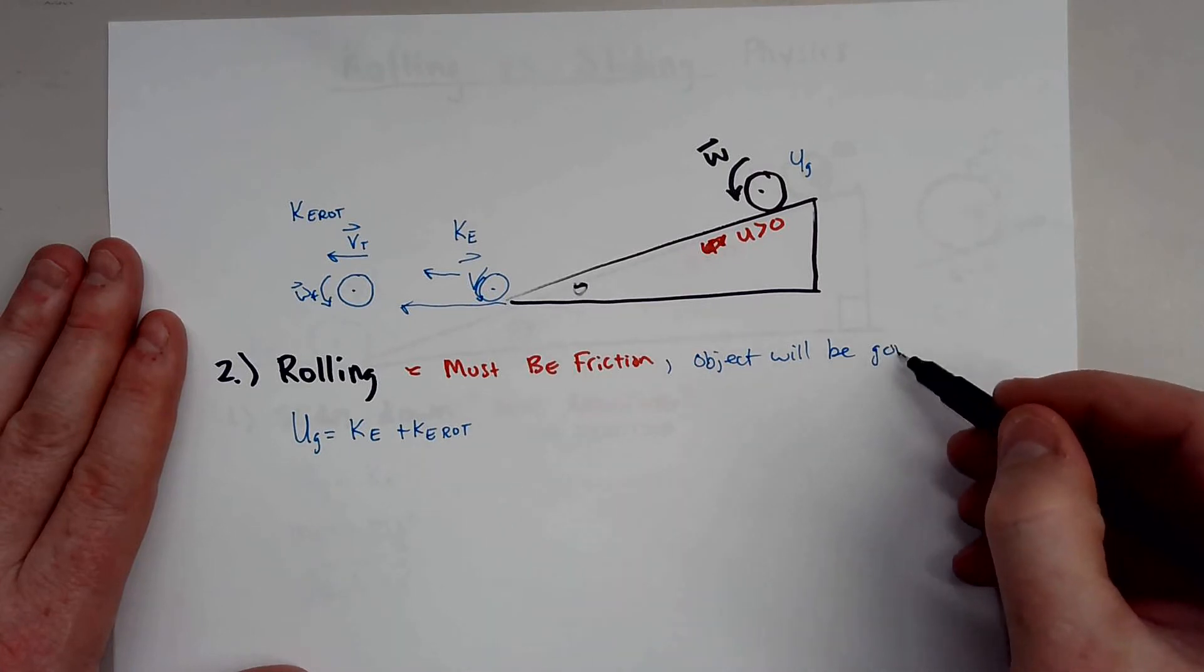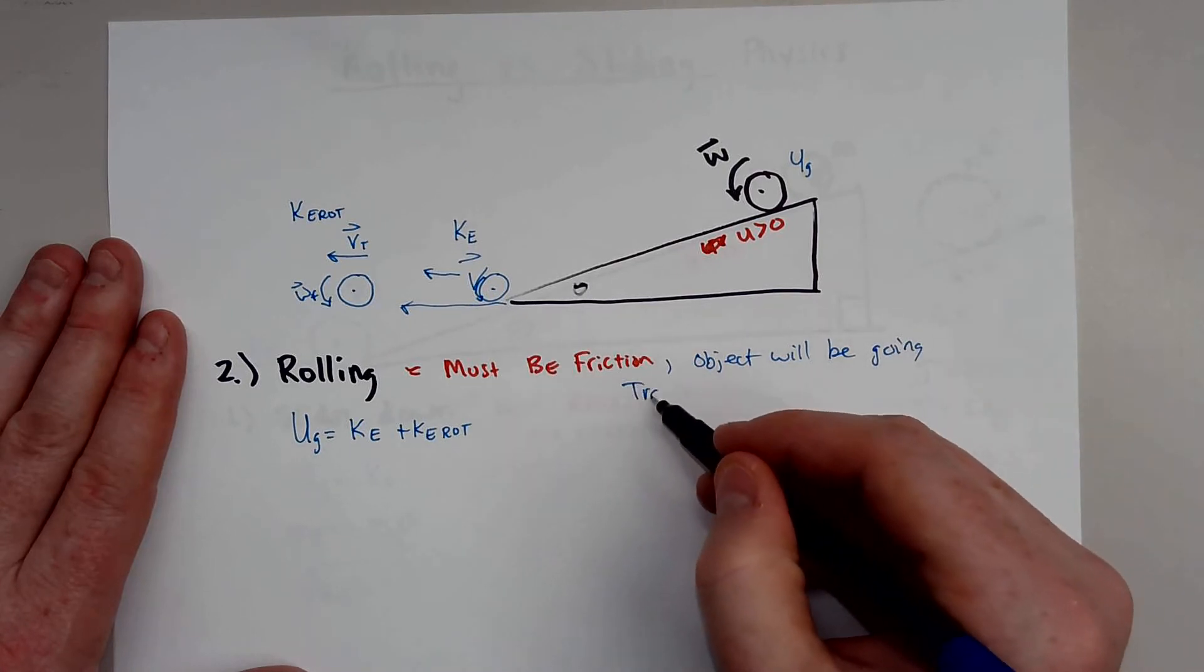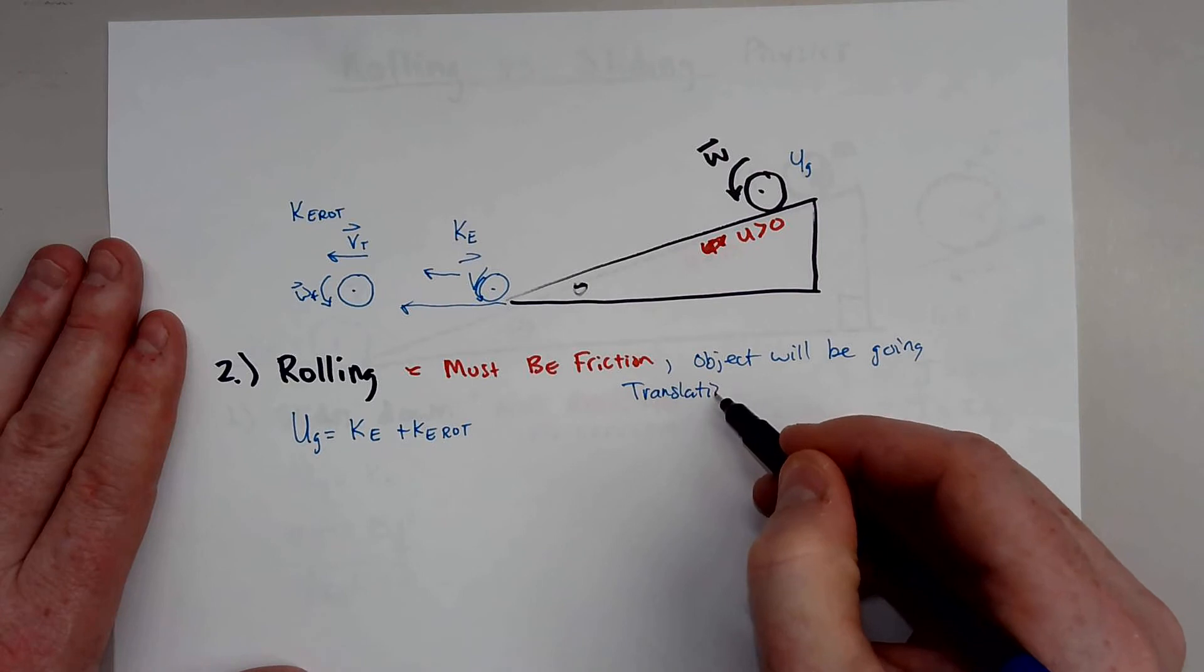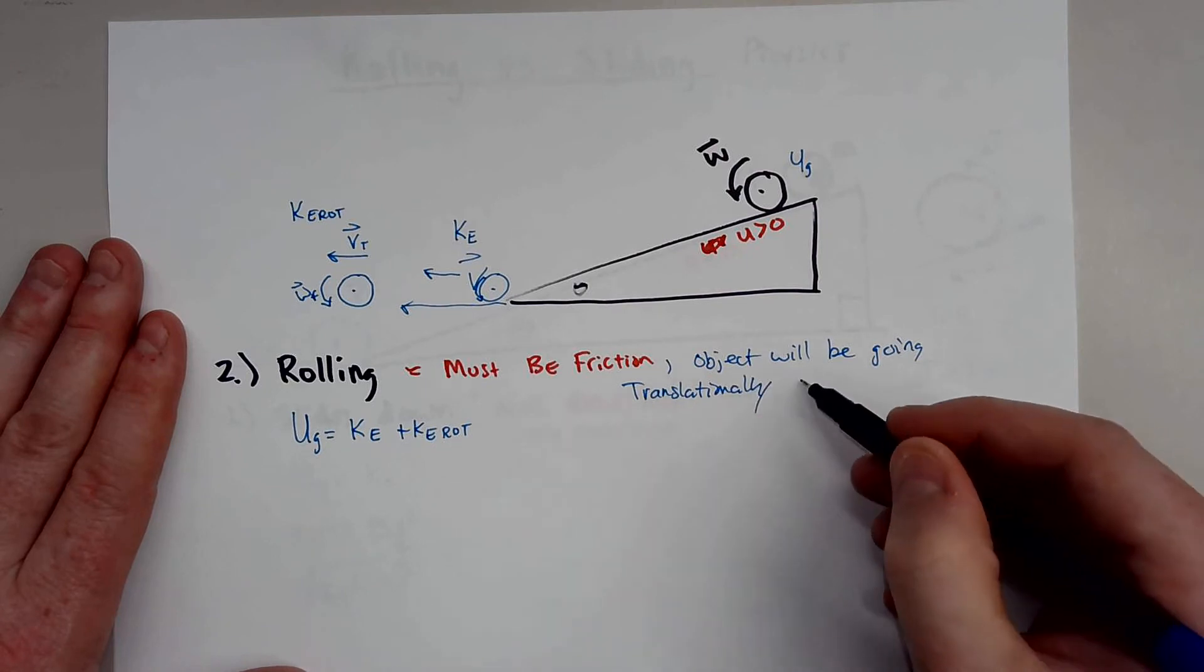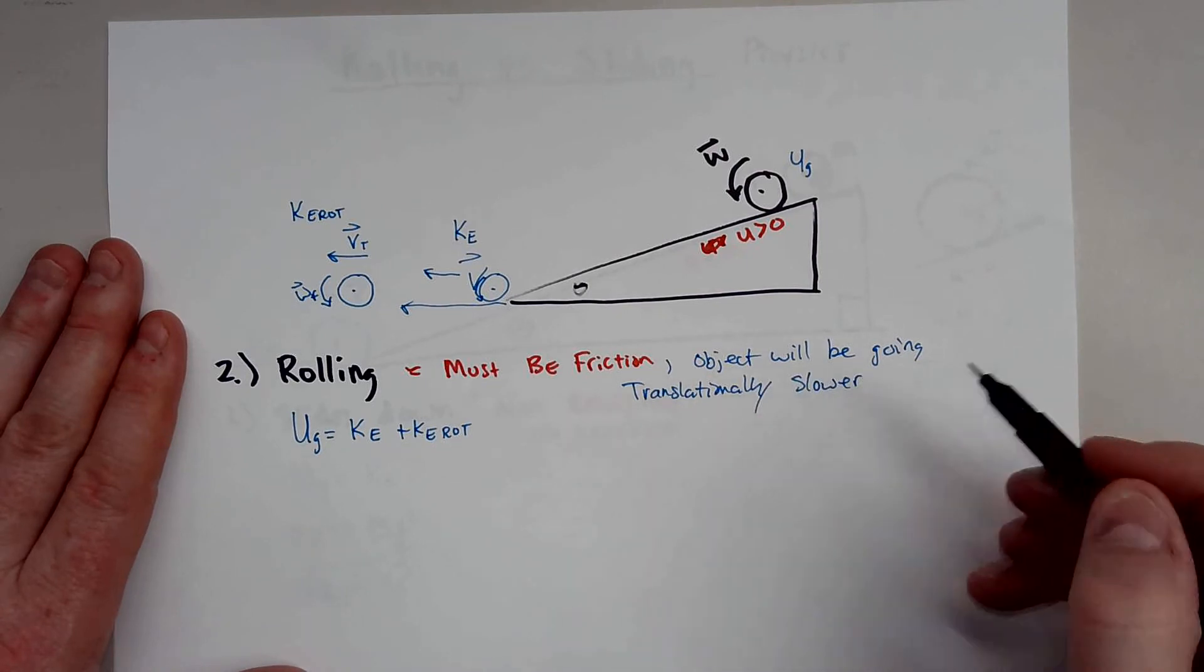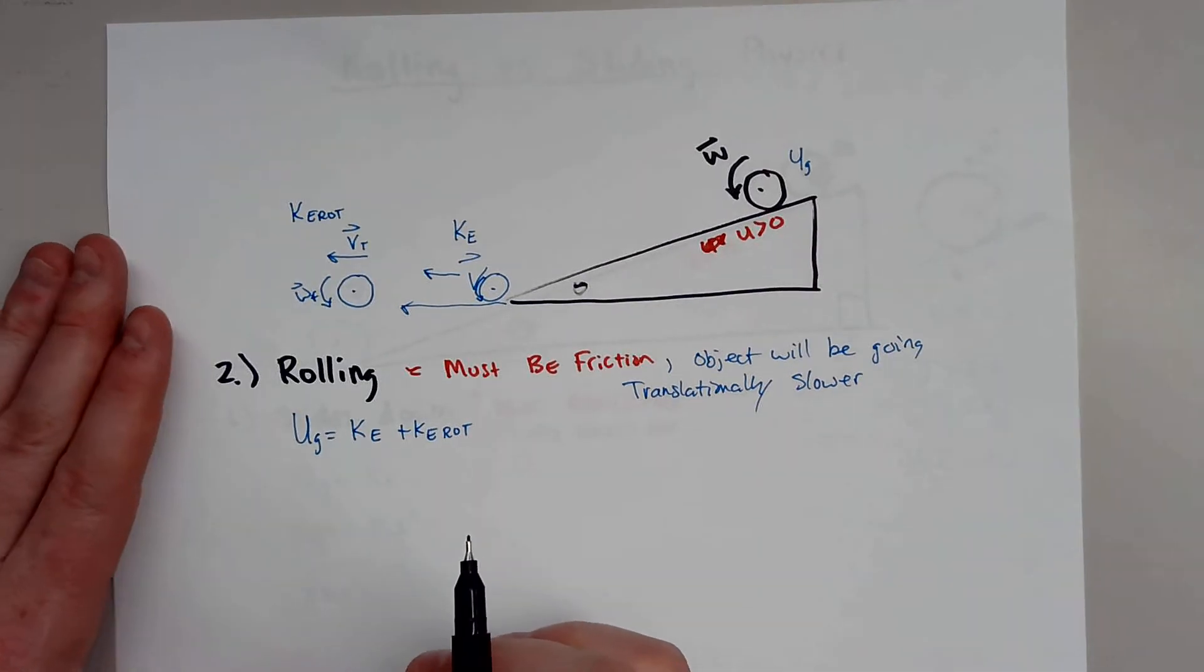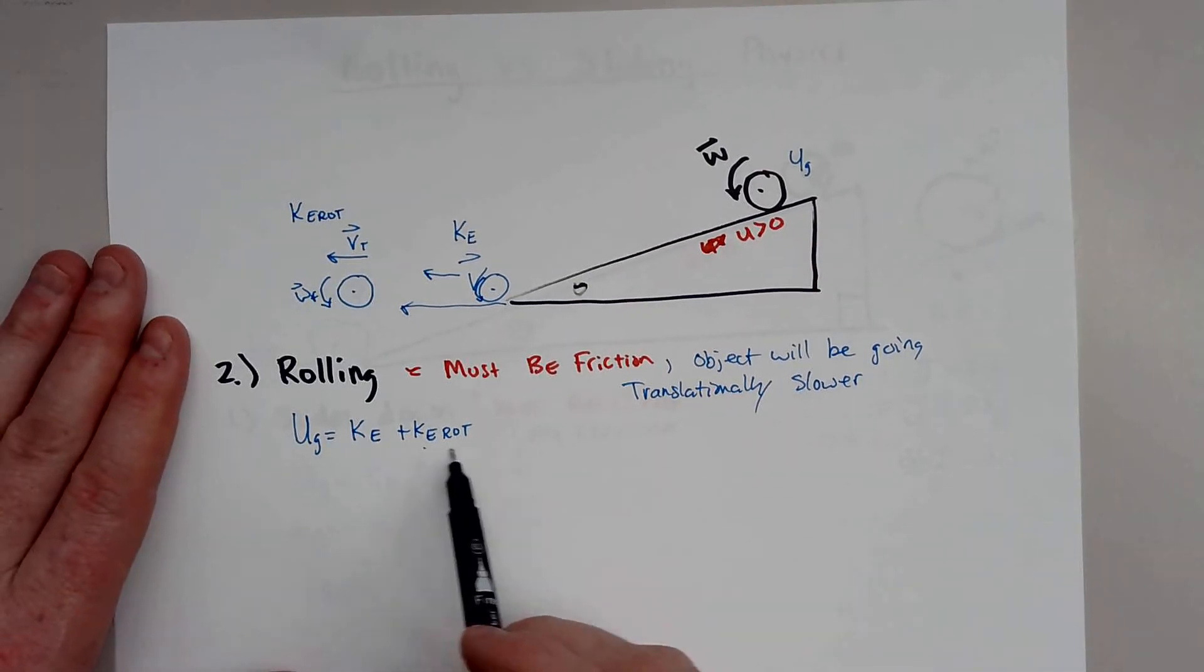It will be going, I should say, translationally slower than if it were sliding, and that is due to the fact that it's losing energy to rotation.